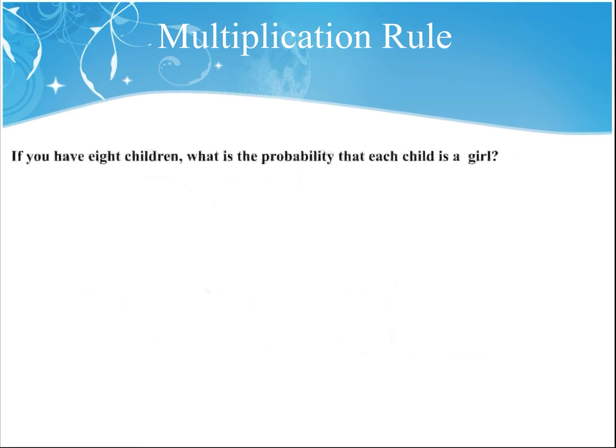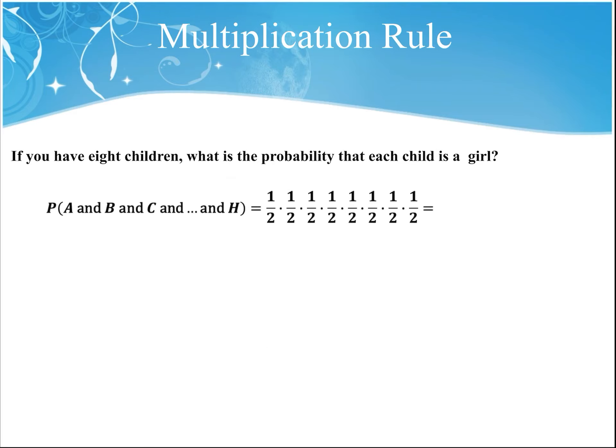If you have eight children, what is the probability that every child is a girl? You still have a one in two chance of having a girl on your next pregnancy. So the probability of having eight girls out of eight children would be 1/2 times 1/2 times 1/2, eight times — or one over two to the eighth power — which is about 0.0039. Pretty small.